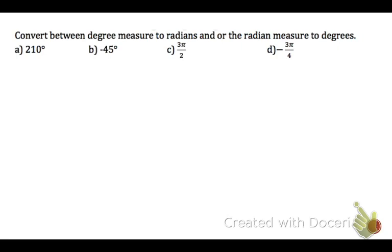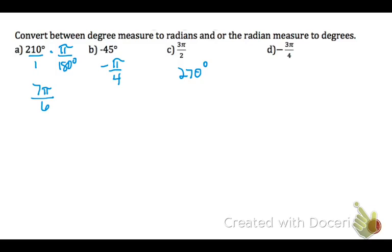More conversions: 210 degrees — since it's in degrees, multiply by π/180 and reduce 210/180 to get 7π/6. For negative 45 degrees, that equals negative π/4. For 3π/2 radians, looking at the graphic, that is 270 degrees. For negative 3π/4 radians, multiply by 180/π — the π's divide out, and 3 × 180 = 540 divided by 4 gives negative 135 degrees.